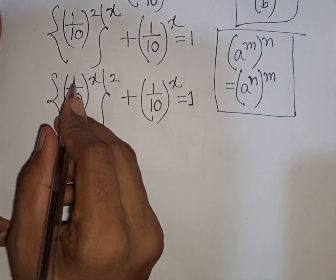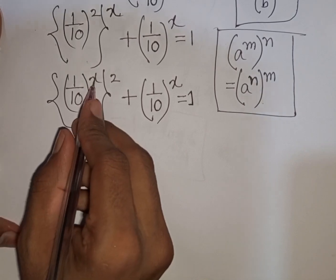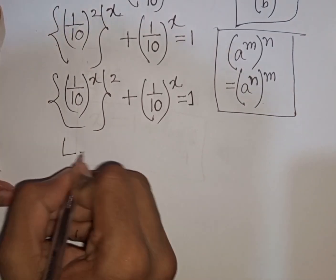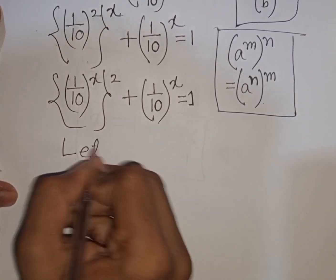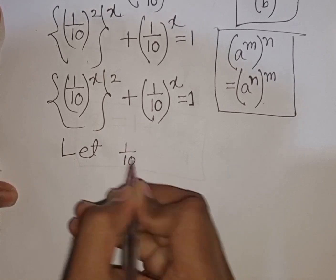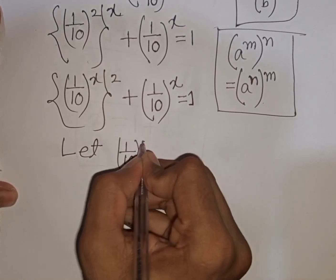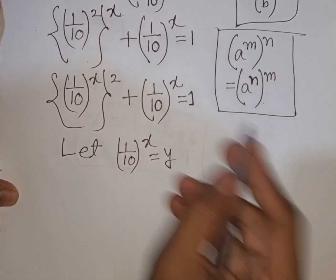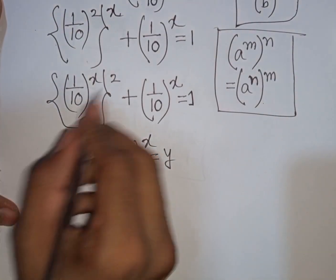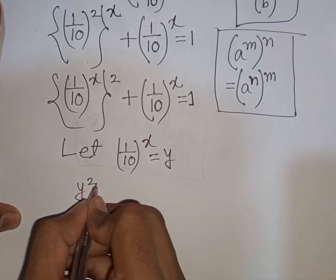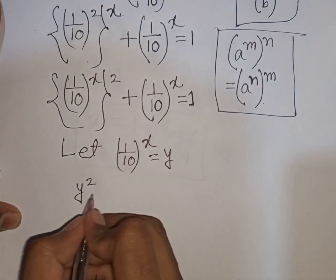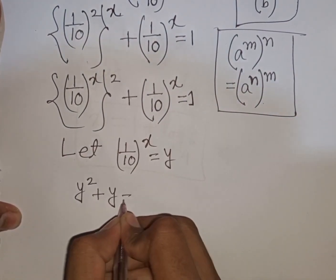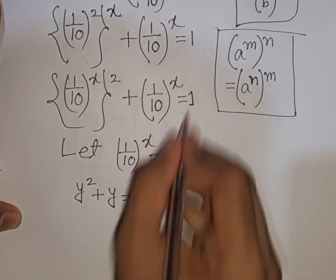We see that 1 over 10 bracket power x appears in both terms. So let 1 over 10 bracket power x be substituted by y. Our equation becomes y squared plus y is equal to 1.